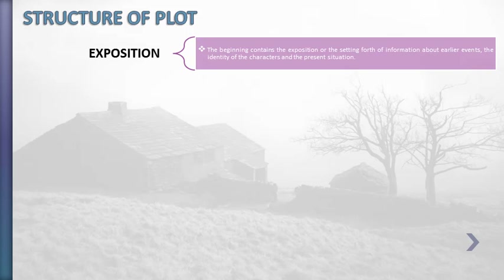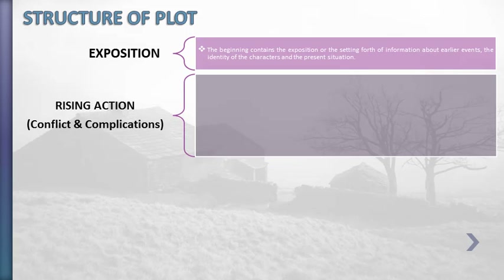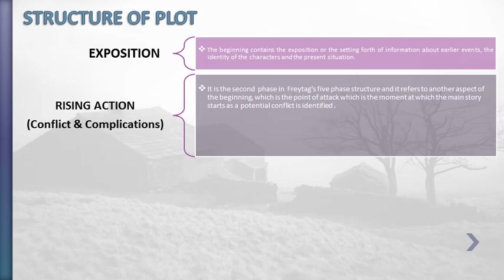After this exposition, the rising action includes both conflict and complication. It is the second phase in Freytag's five-phase structure, and it refers to another aspect of the beginning — the point of attack — which is the moment at which the main story starts as a potential conflict is identified. So the rising action is a continuation of the beginning. Here, the rising action will include the conflict. The conflict will be the investigation.